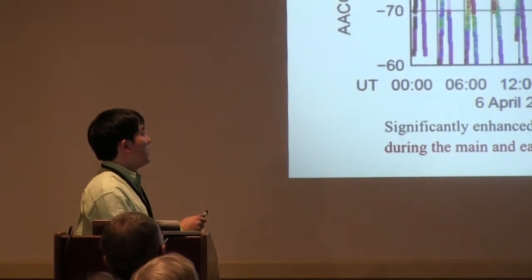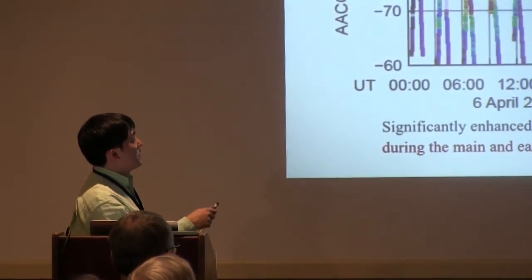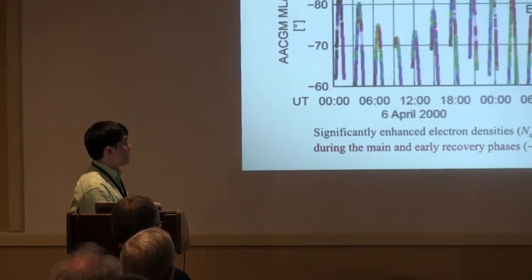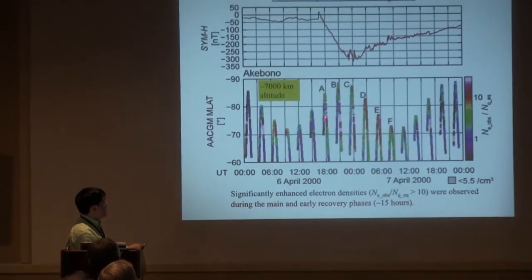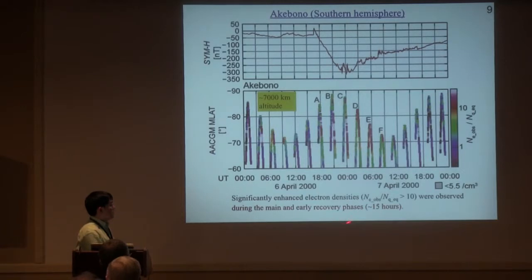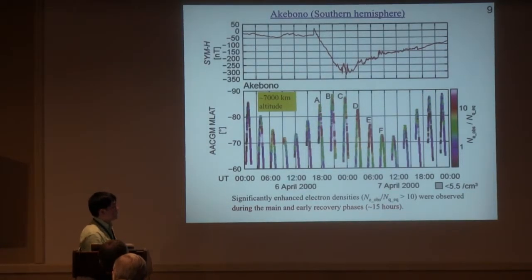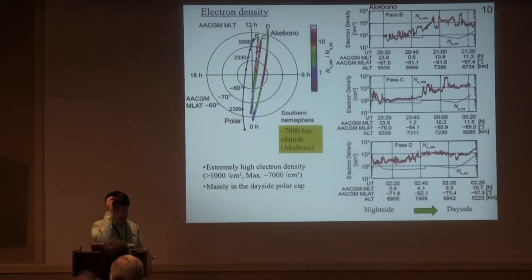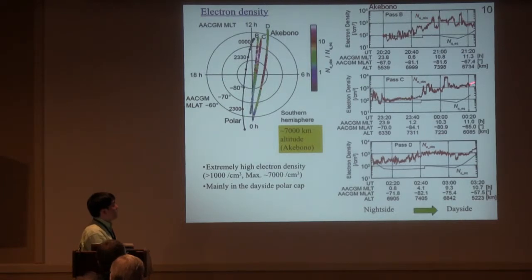This is another event. This is the normalized electron density. The Akebon satellite observed significantly enhanced electron densities during the main to early recovery phase, about 15 hours continuously. This is a polar plot of the Akebon satellite. In this case, the high density observed in the dayside. This is the observed data at about 7000 km altitude. In this case, the electron density reached about 1000 per cubic centimeter. So it is very high density in the polar cap.